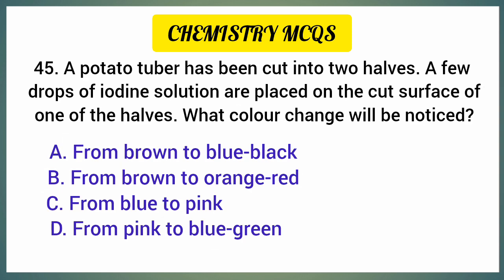A potato tuber has been cut into two halves. A few drops of iodine solution are placed on the cut surface of one half. What color change will be noticed? Correct option is option A: From brown to blue-black.